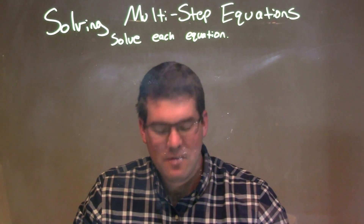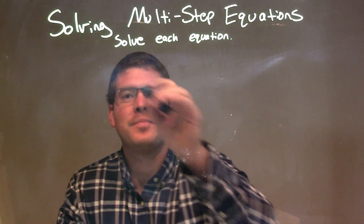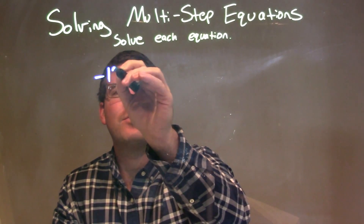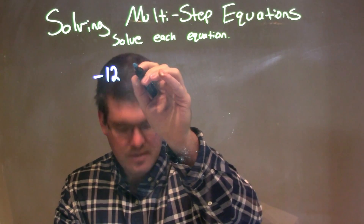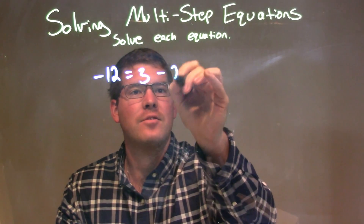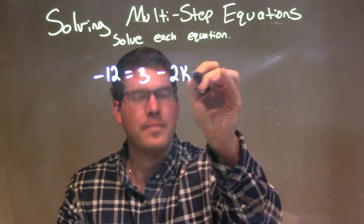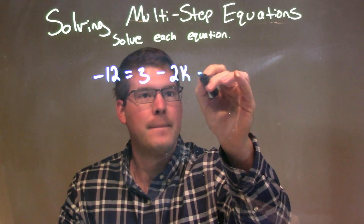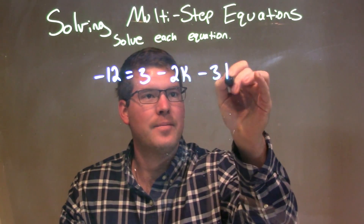So, if I was given this equation: negative 12 equals 3 minus 2k minus 3k.